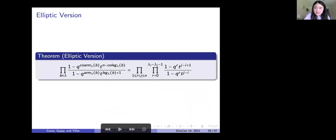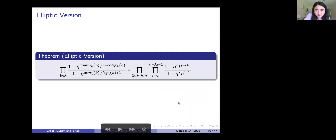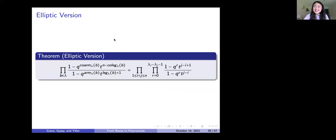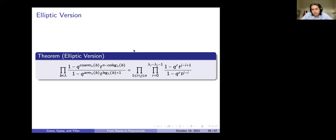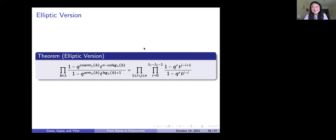There were a few questions in the chat — why is it called the elliptic version? One intuition: an ellipse has two variables, and here we also have two variables q and t. So in a very loose sense, two variables corresponds to the elliptic version. Grace can explain it better after the seminar.